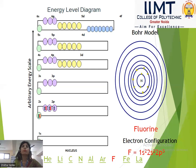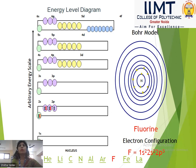Next, fluorine has atomic number 9. Its configuration is 1s², 2s², 2p⁵. In the first shell we have 2 electrons, and in the second shell we have 7 electrons. The maximum number of electrons in the second shell is 8.